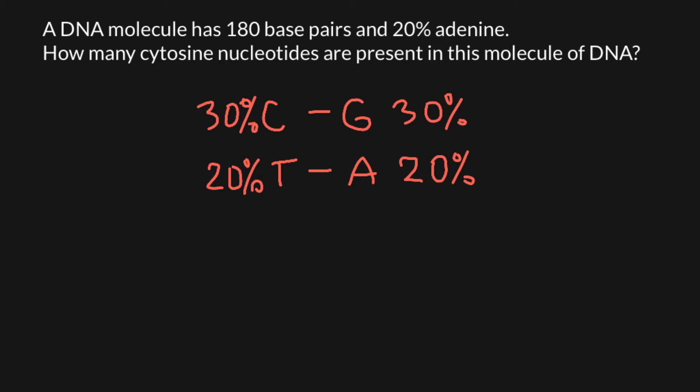But we need to give an answer in absolute numbers. We are told that this double-stranded DNA consists of 180 base pairs. That means that we have to multiply 180 by two. This is how we will find the number of bases in this double-stranded DNA. So this is going to be 360.